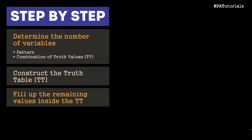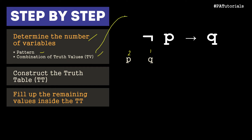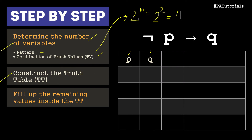Let's move on to our fourth example: not P implies Q. We determine the number of variables — P and Q. Q would be 2 raised to 0 which is 1, and P would be 2 raised to 1 which is 2. The combination of truth values is 2 raised to 2 equal to 4. We construct the truth table: P has a pattern of 2 — two false, two true; Q alternates false, true, false, true, giving us 4 combinations.